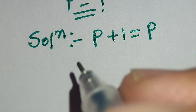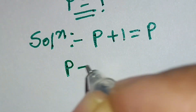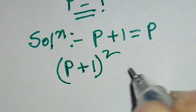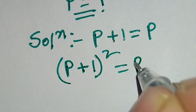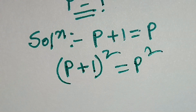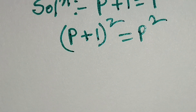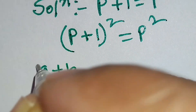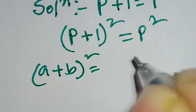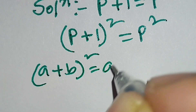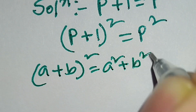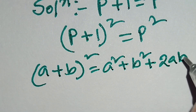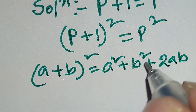Now we will take both sides to the power of 2. So we can write: p plus 1, whole power 2, is equal to p power 2. We know that a plus b whole square is equal to a square plus b square plus 2ab. According to this formula, we can write this line as...